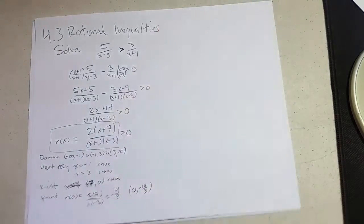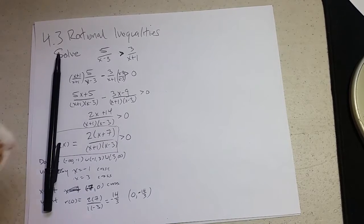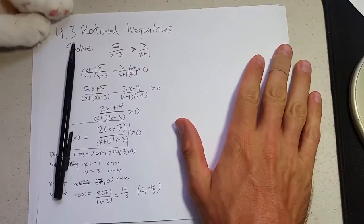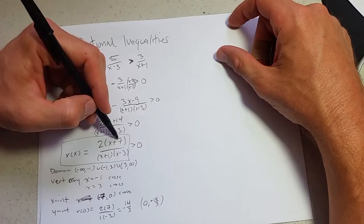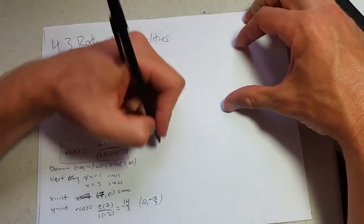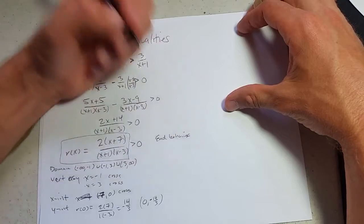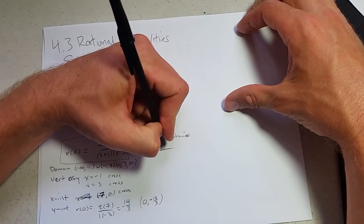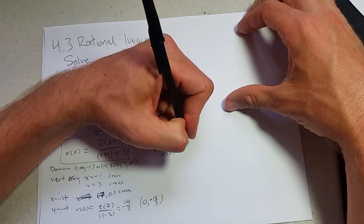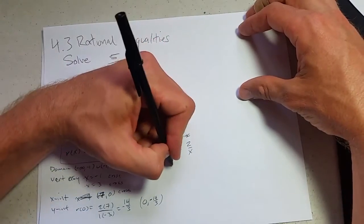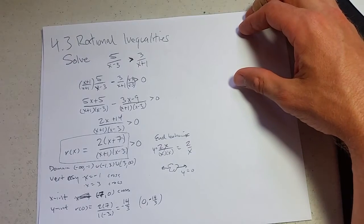End behavior. Don't forget that. We want to throw out small values. The plus 7, the plus 1, the minus 3. So, we're going to get rid of all that. So, it's going to be y equals 2x over x times x. So, the x will cancel. And we have 2 over x. Y equals 2 over x. Denominator wins. So, what does that mean? We get y equals 0.